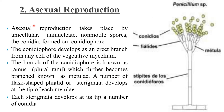Asexual reproduction takes place by unicellular, uninucleated, non-motile spores called conidia. The conidia are formed on the conidiophore. The conidiophore develops as an erect branch from a cell of vegetative mycelium. The branch of the conidiophore is known as ramus, plural rami, which further becomes branched into structures known as metulae.